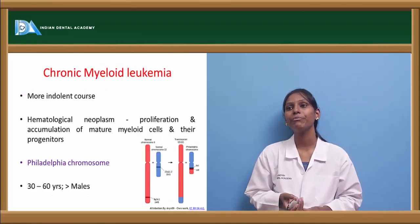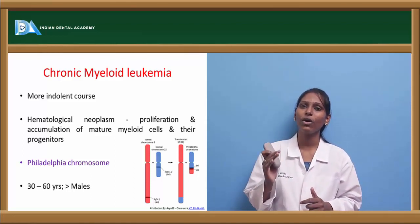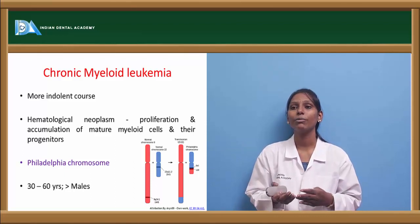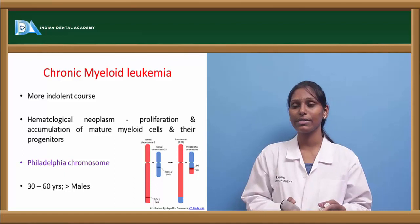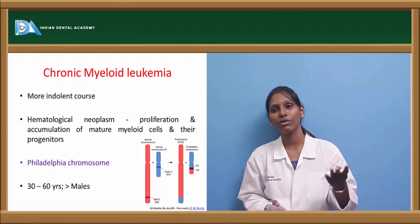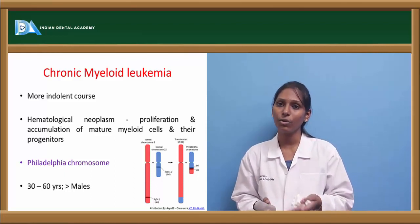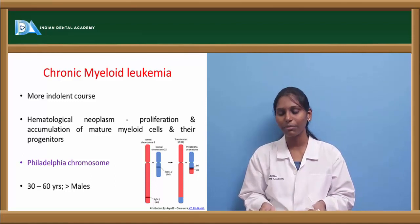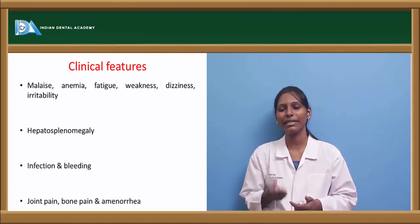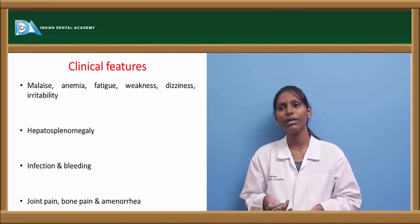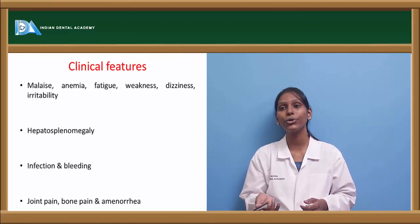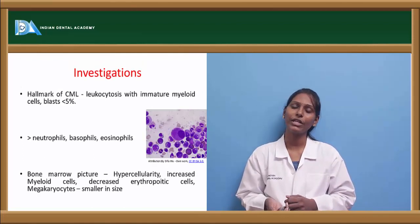Chronic myeloid leukemia (CML) follows an indolent, progressive course where symptoms usually manifest at a later stage. It is a hematological neoplasm characterized by proliferation and accumulation of mature myeloid cells — mature granulocytes and their progenitors. CML is most commonly associated with the Philadelphia chromosome, a translocation of genetic material from chromosome 21 to chromosome 9. It is more common in males, usually seen in the age group of 30 to 60 years. Clinical features include malaise, anemia, fatigue, weakness, dizziness, irritability, hepatosplenomegaly, increased susceptibility to infections, bleeding, joint pain, bone pain, and amenorrhea.